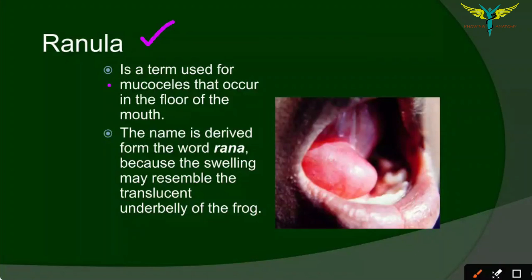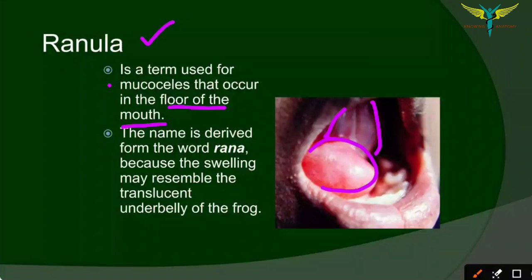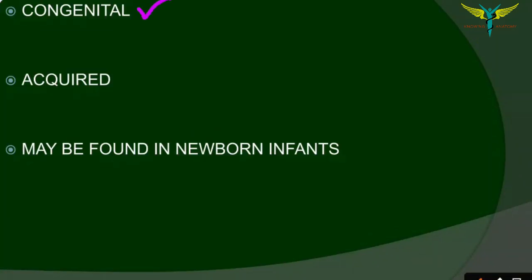Ranula is a term used for mucoceles that occur in the floor of the oral cavity. In this image, the tongue is elevated and this swelling is the ranula. The name is derived from the word 'rana,' as this swelling resembles the translucent underbelly of the frog — hence the name ranula.